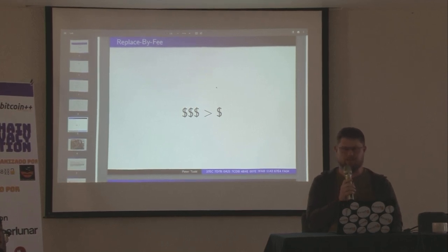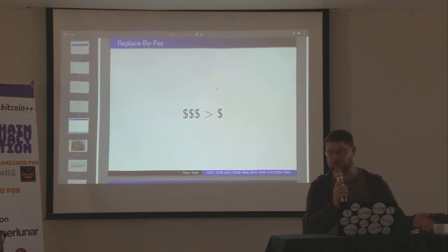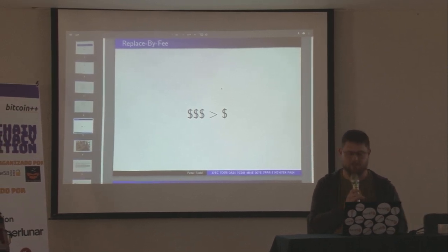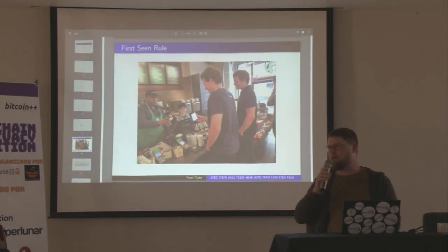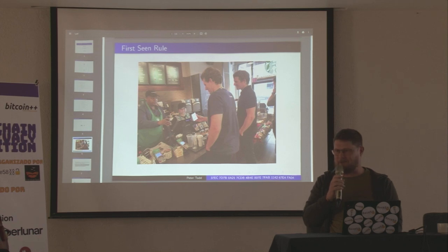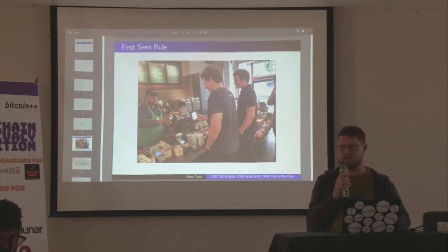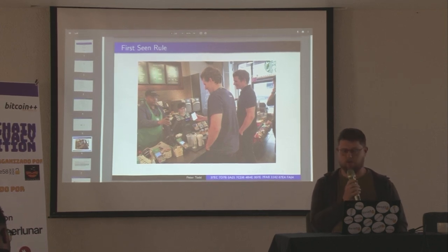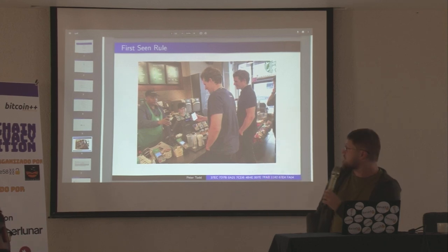At the time, mempools were congested and people could foresee this could be an issue. But there's a catch: people don't like transaction replacement, because part of Satoshi's original implementation as a byproduct wound up having something called the first-seen rule, which is as it suggests — the first transaction you see is the one you mine.